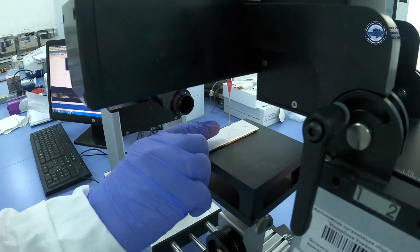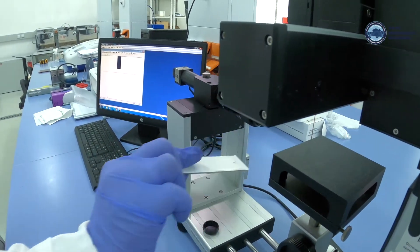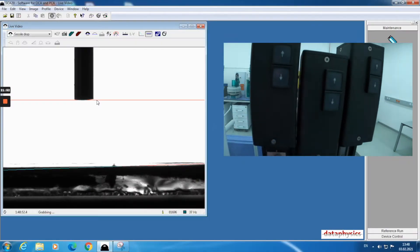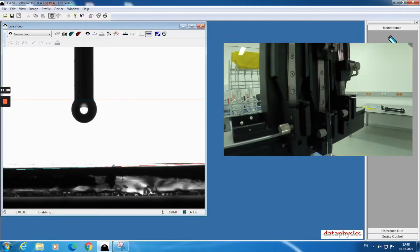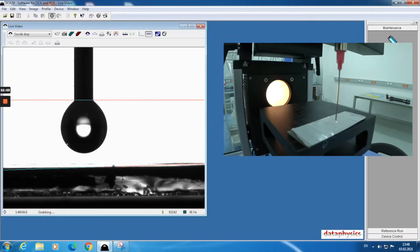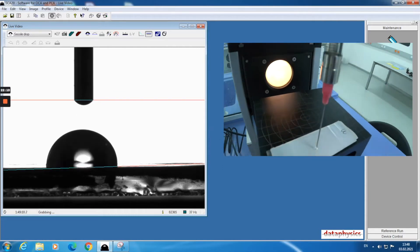Then we will take out our virgin membrane from the device and place the fouled membrane. Now we will perform contact angle measurement of fouled membrane in the same way we did for the virgin membrane.